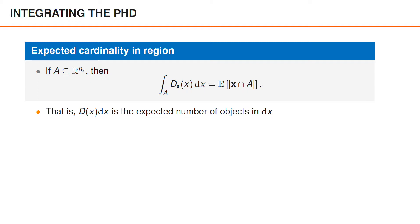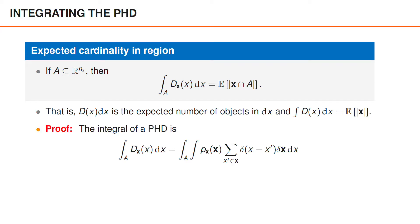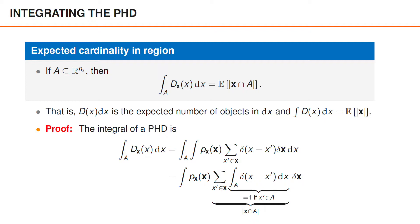We can therefore think of the PHD as an expected object density. Second, by setting A to the entire state space, we also conclude that the set integral over the entire PHD is the expected number of objects in total. To prove this relation, we integrate the PHD over some area A. Plugging in the definition of the PHD, we obtain a double integral over the vectors x in A and the set integral over boldface x. The integrand is the multi-object PDF of x times the summation over elements x' in boldface x of the Dirac delta function of x minus x'. We can use the fact that the vector x only appears inside the Dirac delta function and push the integral over x into the summation over the elements of boldface x.